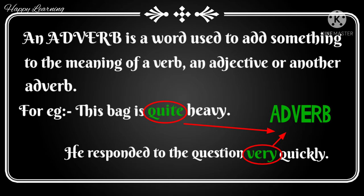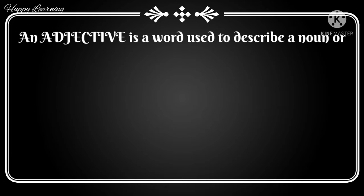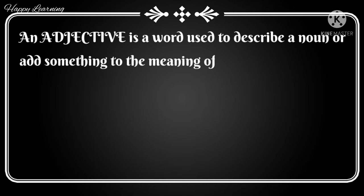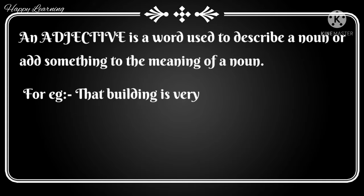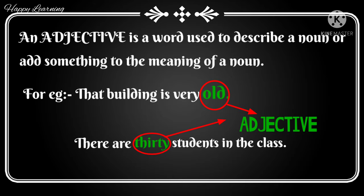Now let's move on to the adjective. An adjective is a word used to describe a noun or add something to the meaning of a noun — in short, adjectives are describing words. For example: 'That building is very old' and 'There are 30 students in the class.' In these sentences, 'old' and '30' are the adjectives.